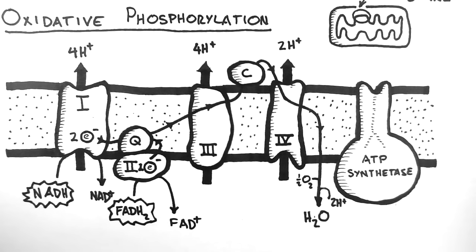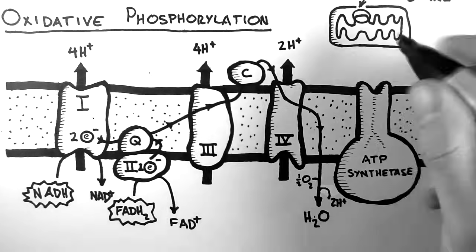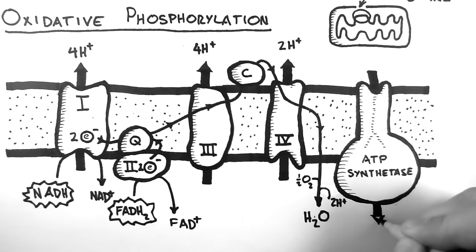Finally, these protons then flow back down their electrochemical gradient through the ATP synthetase. For every 4 protons that flow through the ATP synthetase, a single ATP is produced.